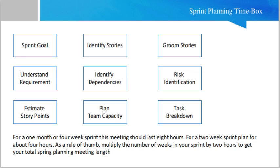Sprint planning is an event in the Scrum framework which is based on the agile concept. For a one-month or four-week sprint, this meeting should last eight hours. For a two-week sprint, plan for about four hours. As a rule of thumb, multiply the number of weeks in your sprint by two hours to get your total sprint planning meeting length.